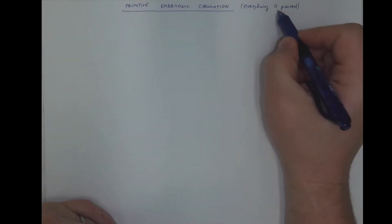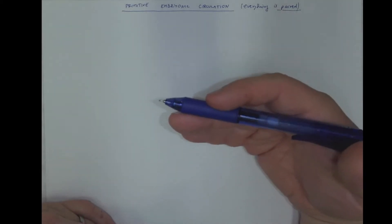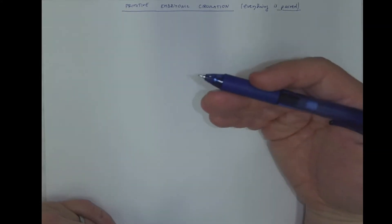In this scheme, we should have on our mind that everything is paired. All the blood vessels will be on both right and left side.